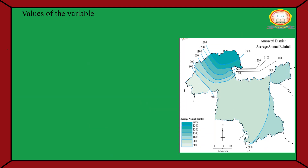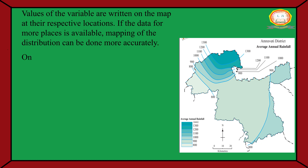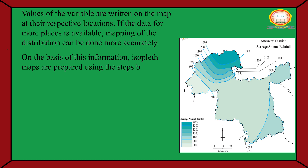Values of the variable are written on the map at their respective locations. If the data for more places is available, mapping of the distribution can be done more accurately. On the basis of this information, isoplat maps are prepared using the steps below.